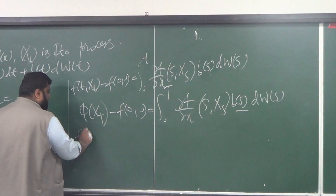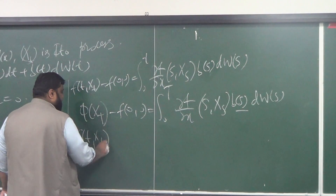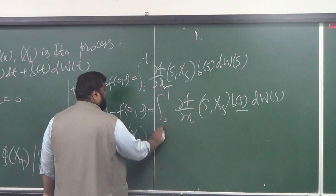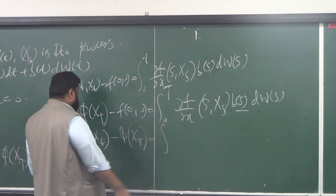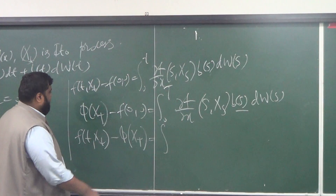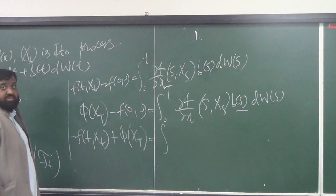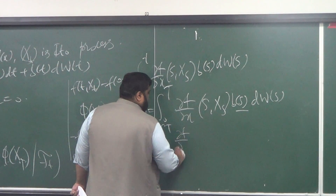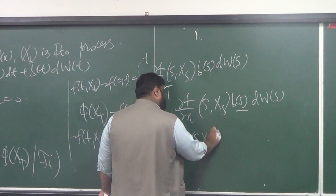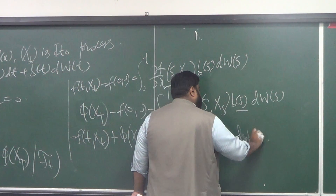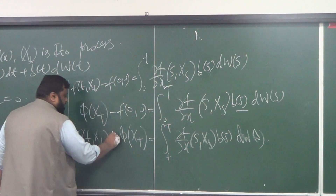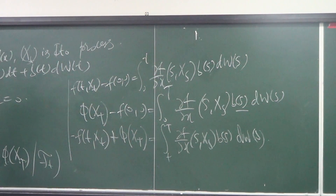Now what can I do? Simple — just take the difference. So f(t, Xt) minus phi(X_T) equals the integral from small t to capital T of (∂f/∂x)(s, Xs) · b(s) · dWs. And here is the major argument: take the conditional expectation on both sides.